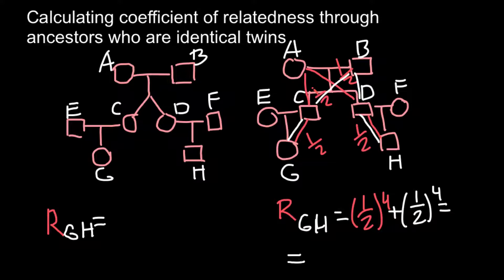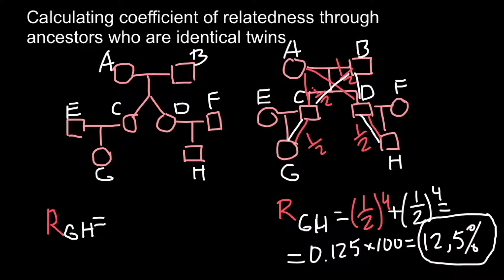And the answer would be 0.125. If we need an answer in percentage form, we have to multiply this number by 100. The answer would be you're related to your cousin by 12.5%. And this is what we got on our right side.